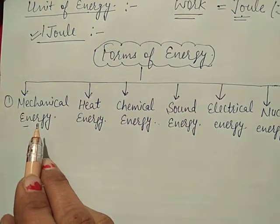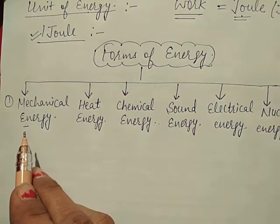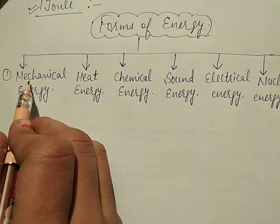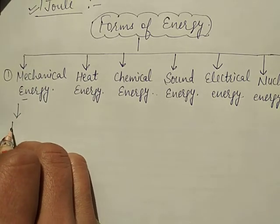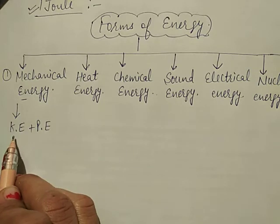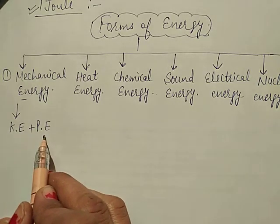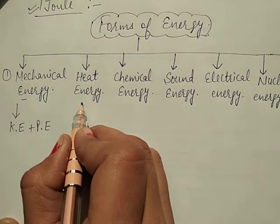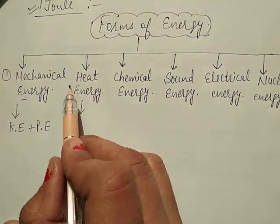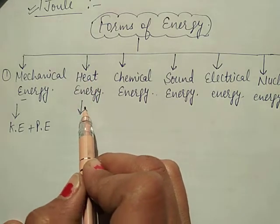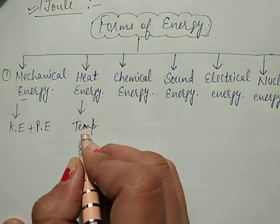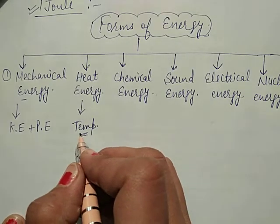First is mechanical energy. Mechanical energy is the sum of kinetic energy and potential energy of a body. Second is heat energy or thermal energy. It is the energy shown by a body due to its temperature, because it depends on the temperature. Thermal means heat, so its name is thermal energy or heat energy.